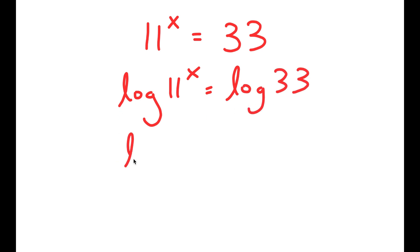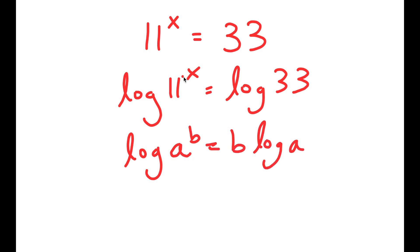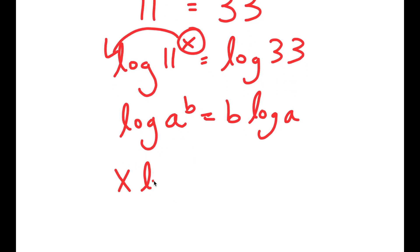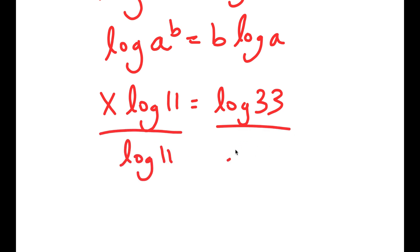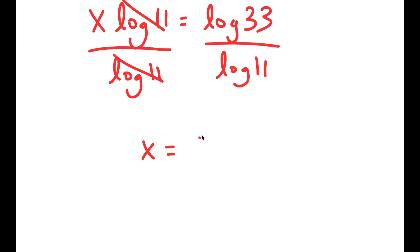If I have something in the form log a to the power b, this is equal to b times log a. So log 11 to the power of x, I can move x to the front, so I get x times log 11 is equal to log 33. And from there, I can divide both sides by log 11. So these two cancel out, and I get x is equal to log 33 over log 11.